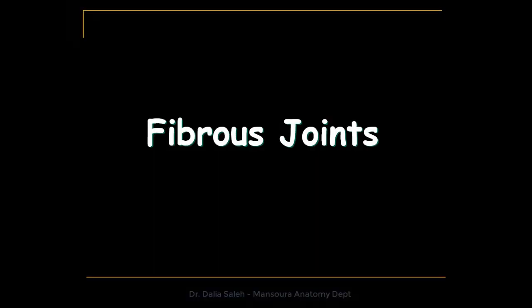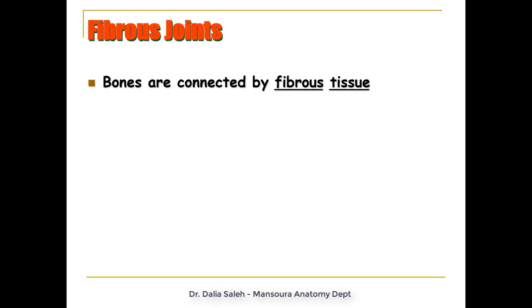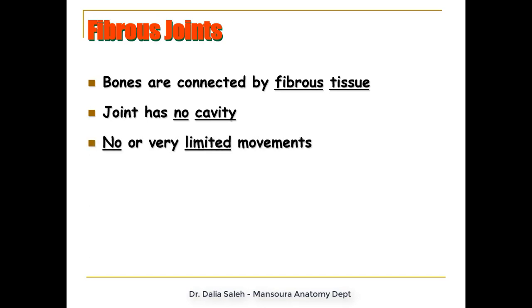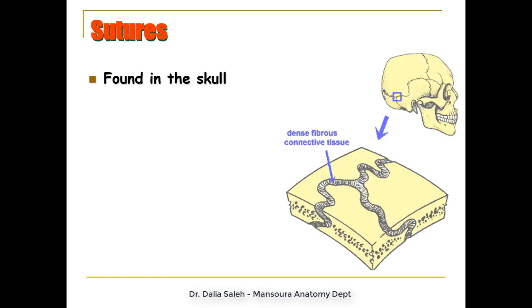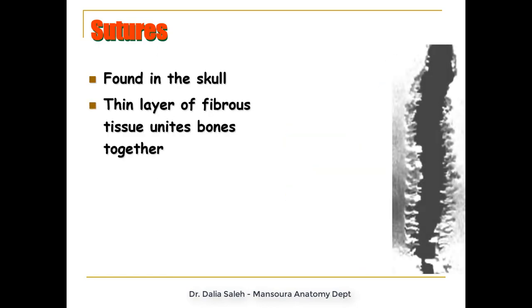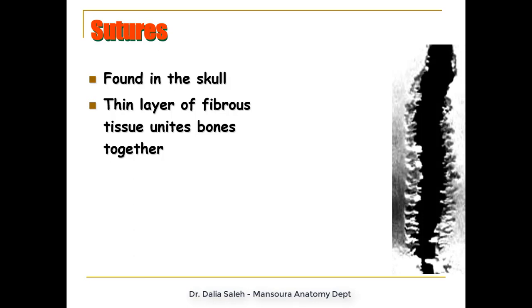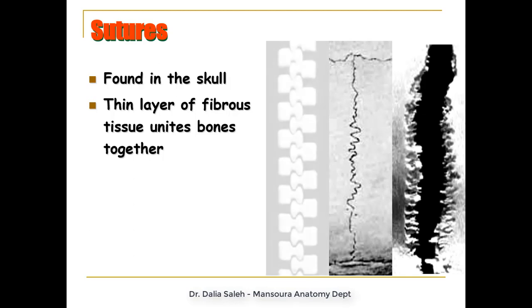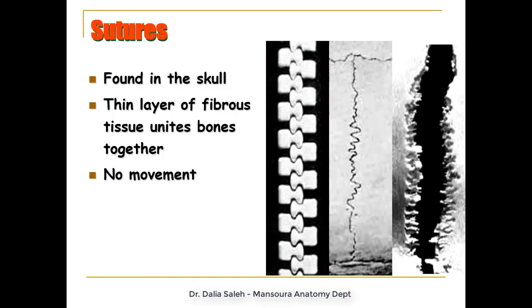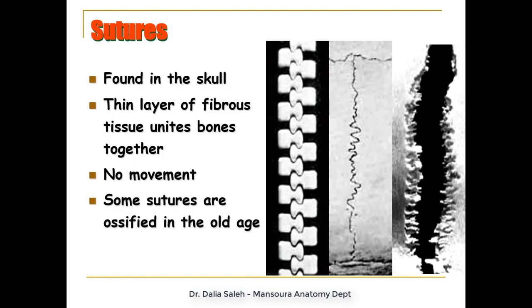In fibrous joints, the bones are connected together by fibrous tissue. The joint has no cavity because it is filled with fibrous tissue. No or very limited movements occur at this joint. They are classified into sutures, syndesmosis, and gomphosis. Sutures are found in the skull, where a thin layer of fibrous tissue unites the edges of the bones together, looking like a suture. There is no movement at these joints, and some sutures are ossified in old age.